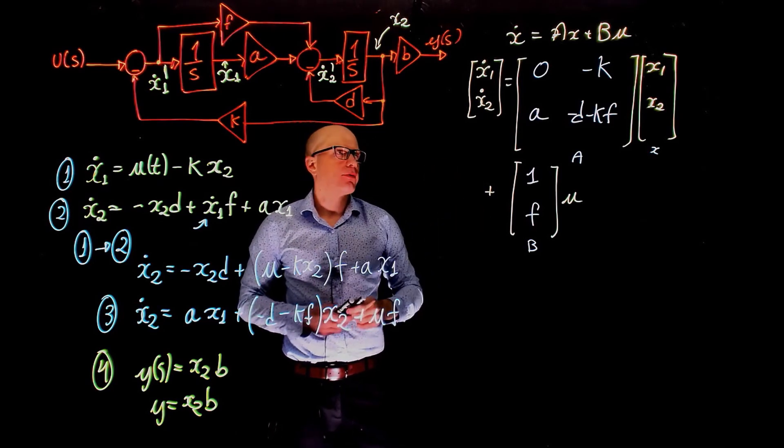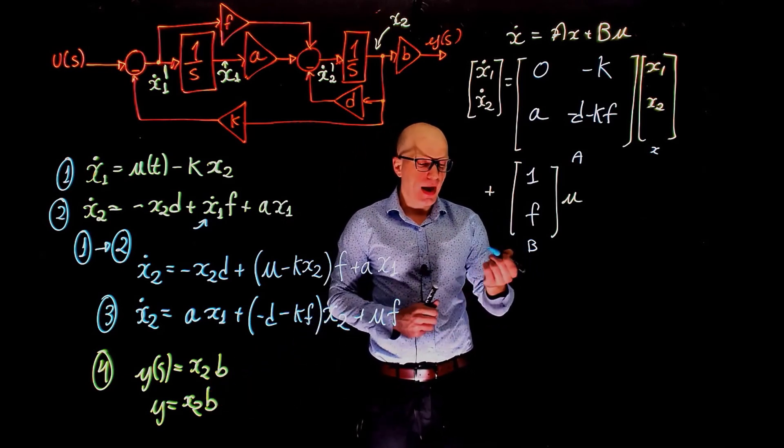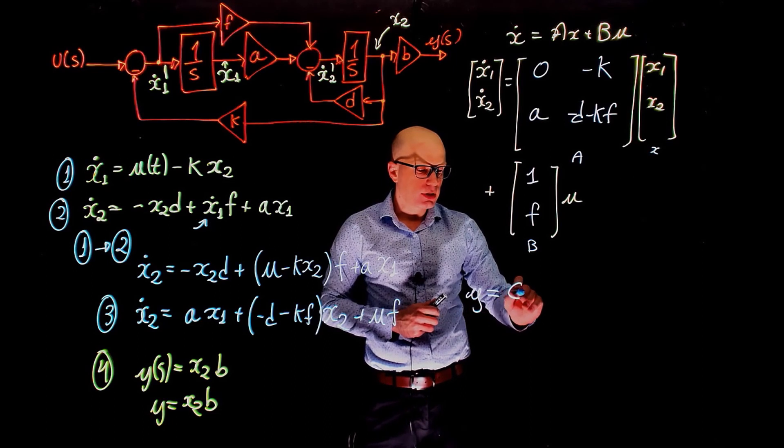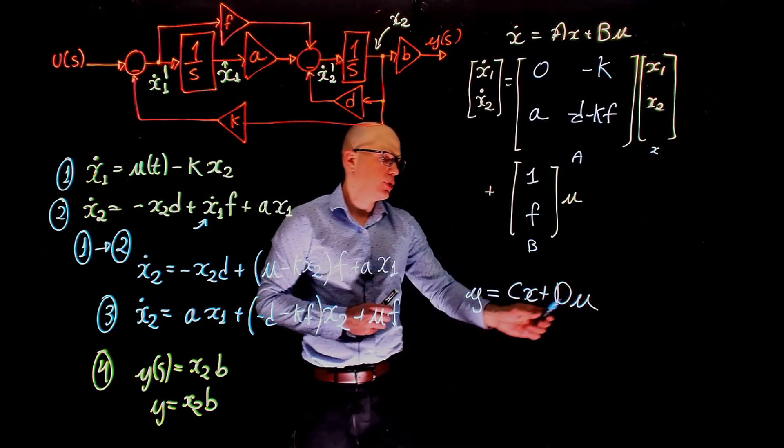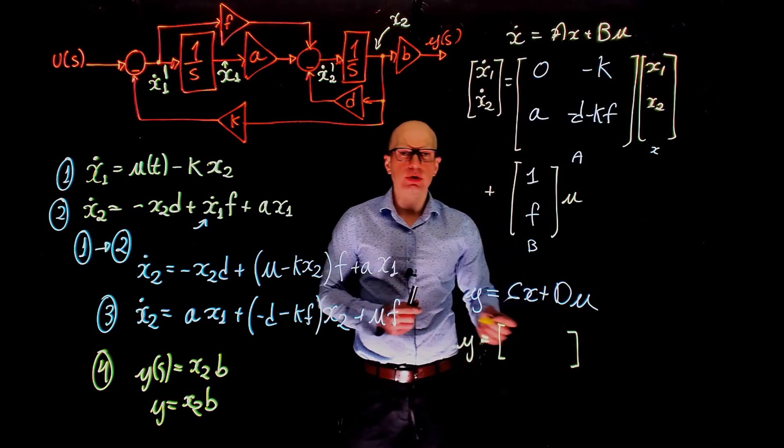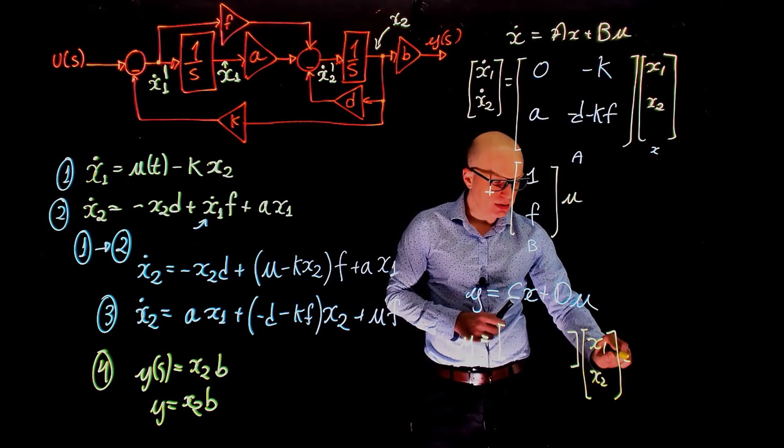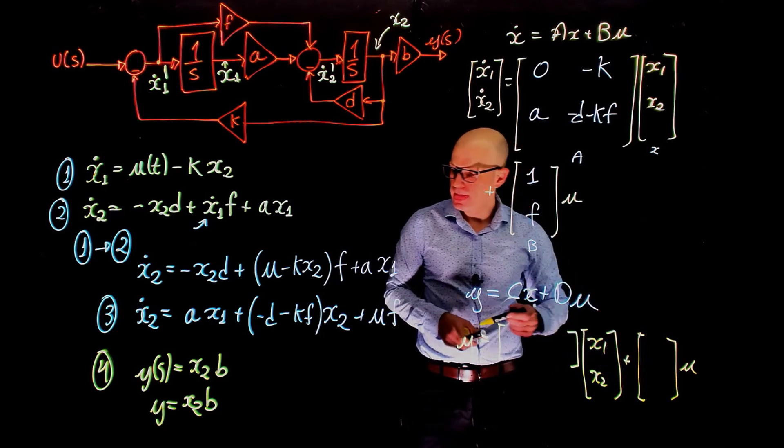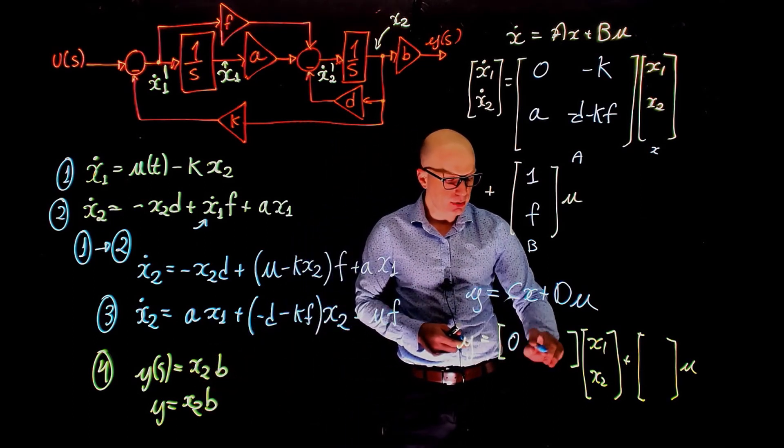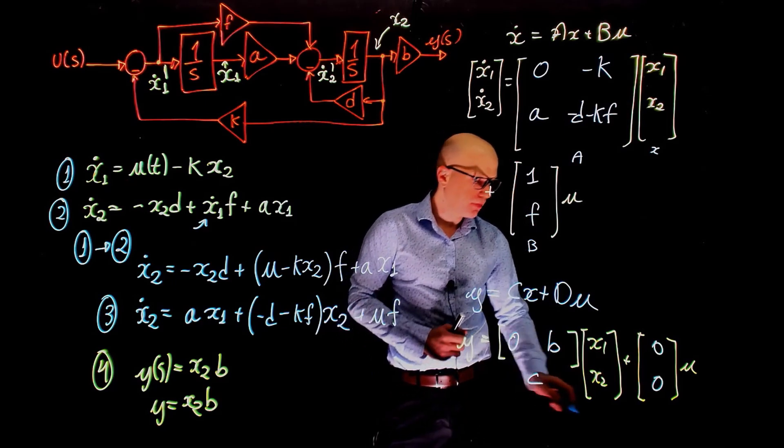Very well. So this is half of our job. Now we need an expression for the output. The output of our system is defined here as x2 times b. And in the state-space representation, we need now an expression in the following format. y equals to C times x plus D times u. u is, again, the input. So here we have y is equal to C, is a vector that we're going to define, times x. x is x1, x2, plus D times u. What do we have? We simply have y of t equals to x2 times b. So this is 0, this is b. And the input doesn't appear in equation 4. So here we have for D, 0. So here is matrix C, here is the matrix D.